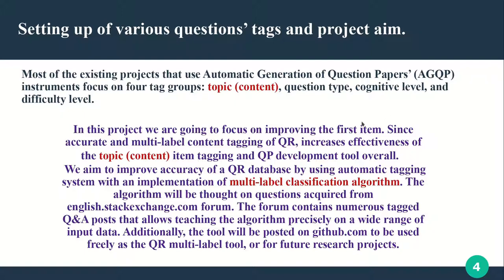Tagging is essentially a synonym of classification — it's just putting a special label on the content of the question. After that, the question paper developer would be able to choose or combine different questions according to their content. We are going to implement a multi-label classification algorithm, because our idea is to put not just one tag but several labels to one question. This is called multi-label classification, and it's quite an advanced classification algorithm.